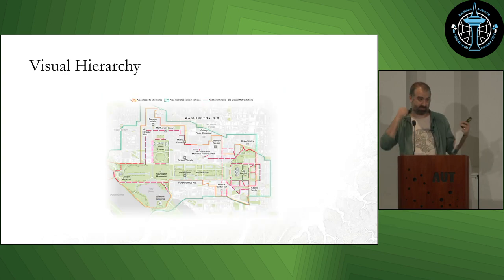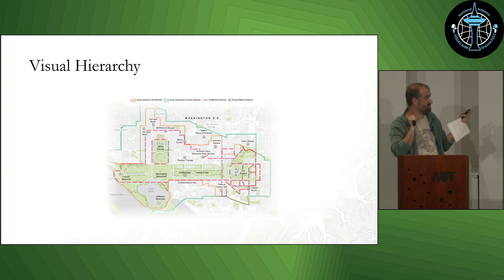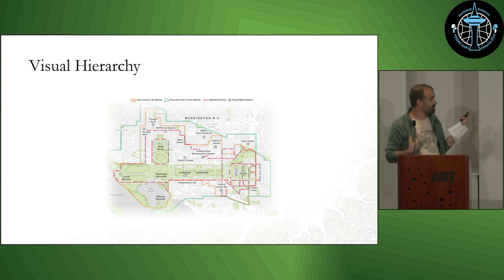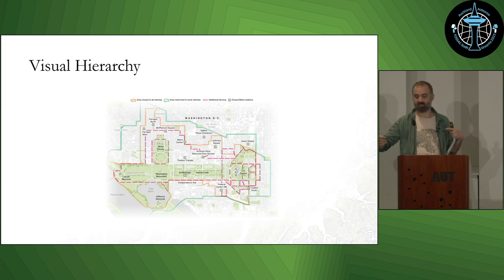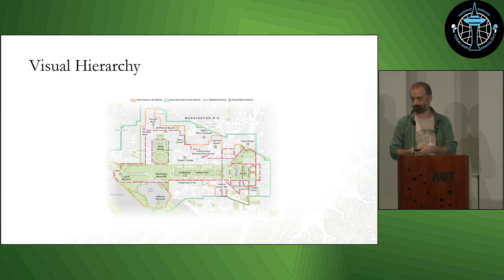Another nice example: there's actually a lot of information on there — lots of houses and roads — but they're sunk into the background because they're light gray. So lots of information, but I can take it in order, I can see it and get the story out of it.